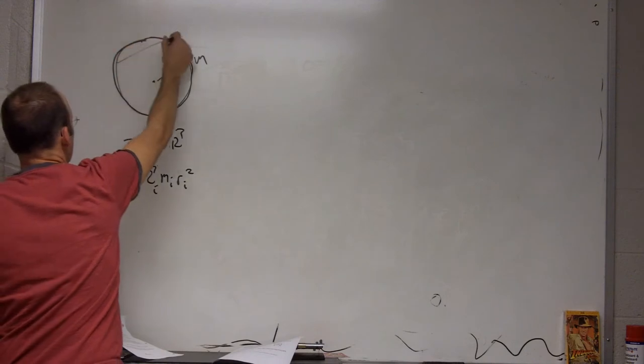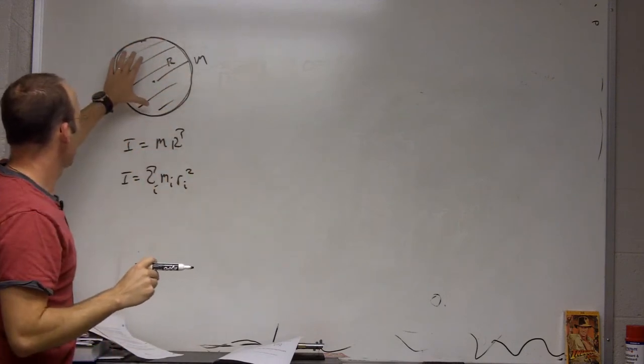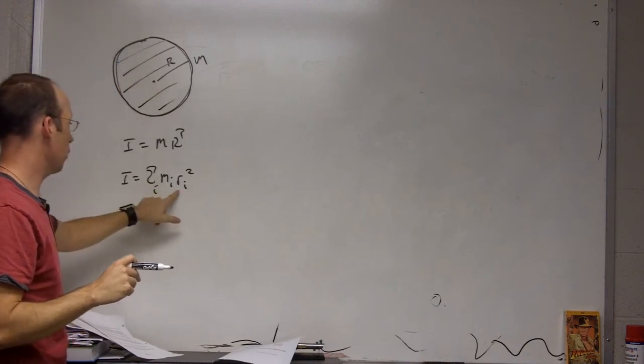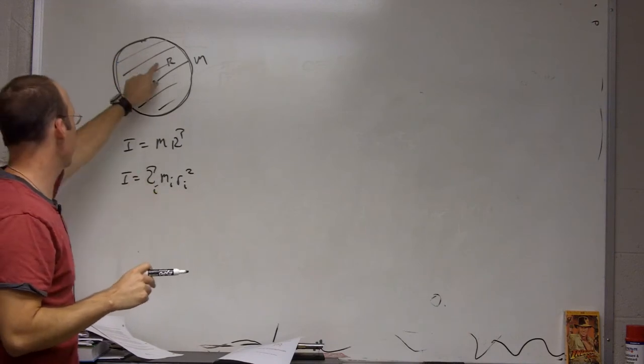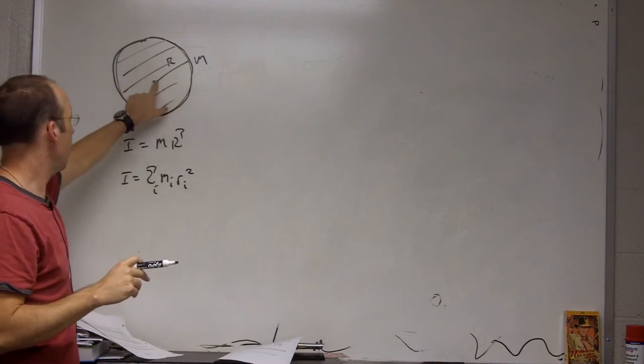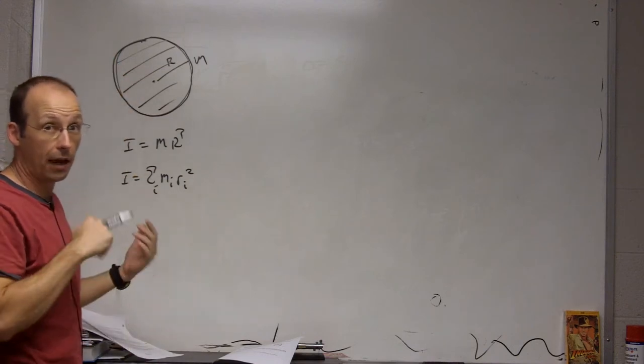Because in the case of a solid disk, some of the mass, if you look right here, you can no longer factor out r. If you break it into a whole bunch of little pieces, some of them are close to the axis of rotation and some are far away, so they're not all the same. You can't factor that out.